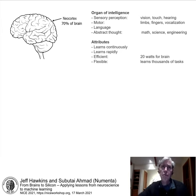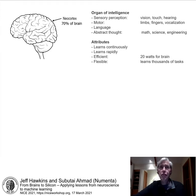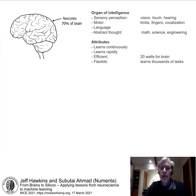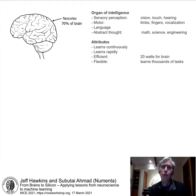The neocortex has remarkable attributes. It learns continuously — if you're awake, you're learning new things, and it never stops. It learns very rapidly; often one exposure is sufficient to understand a new concept or object. It is extremely efficient — approximately 20 watts for the entire brain. And it's incredibly flexible: we can learn thousands of tasks, including things we didn't evolve to do. It's a general purpose machine, not just a set of tricks.